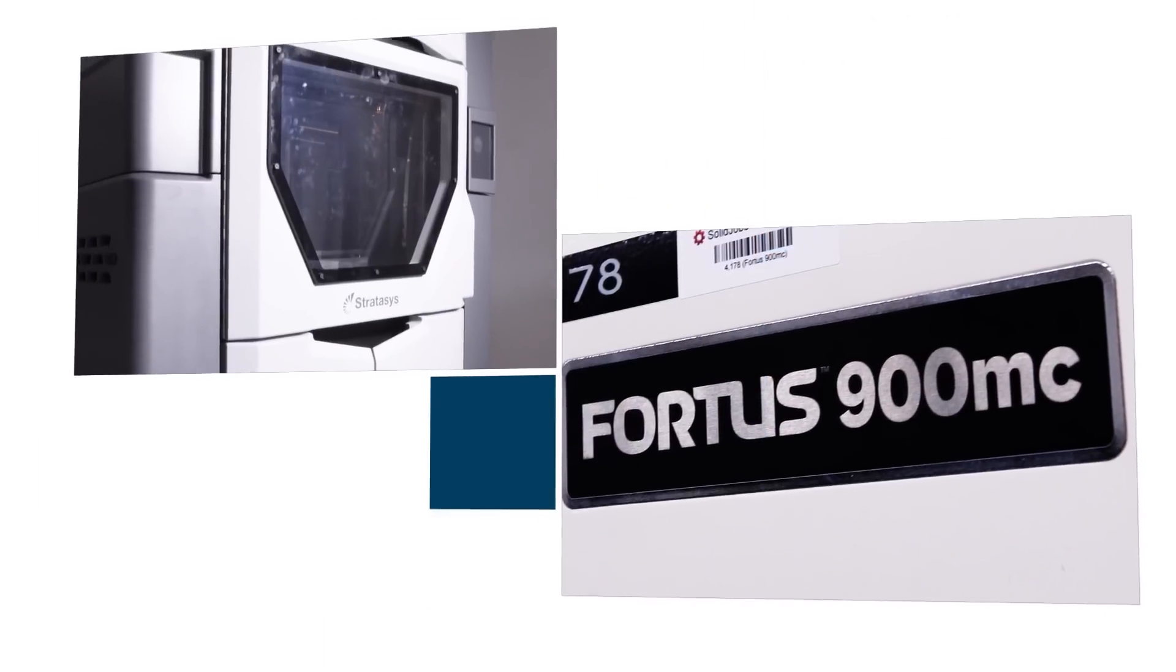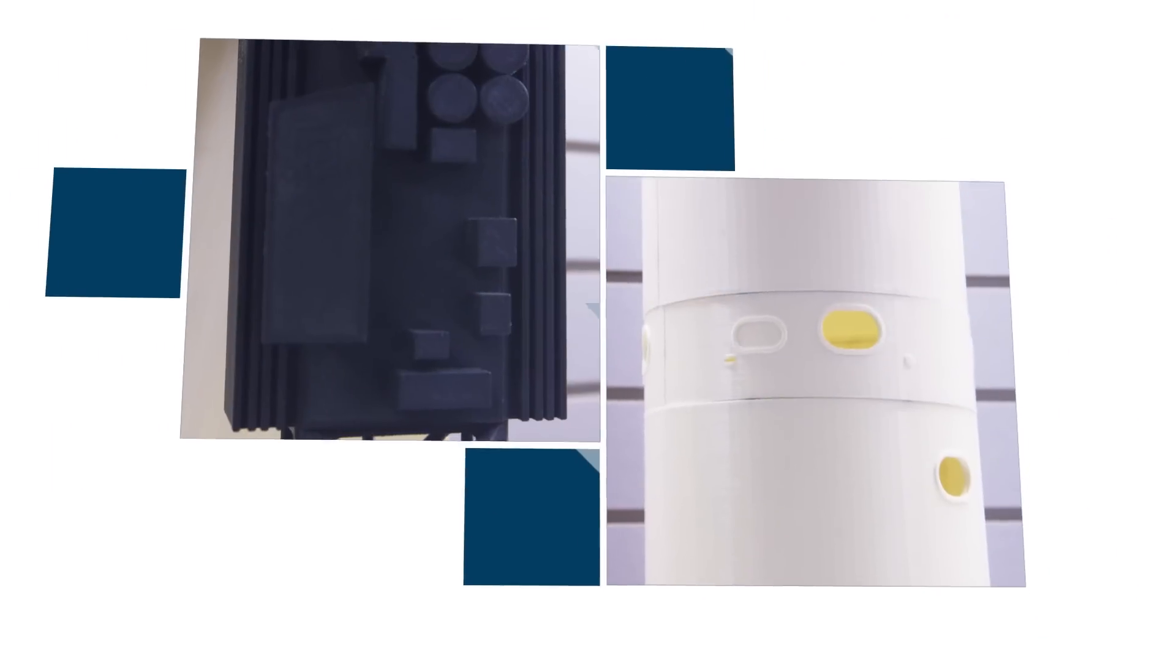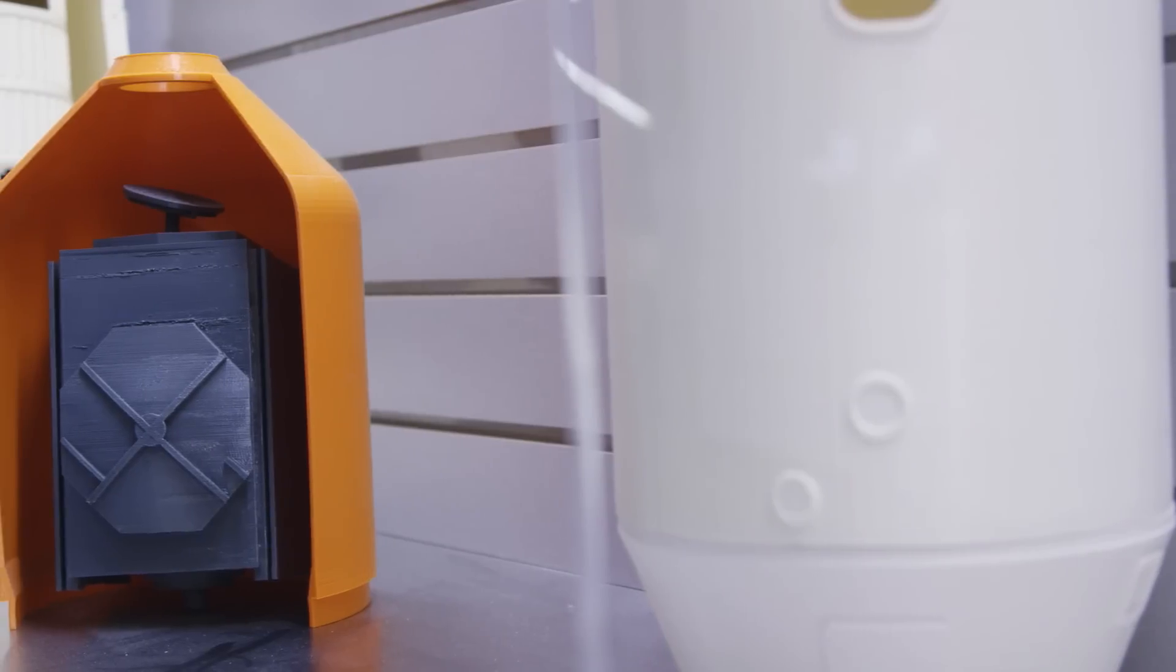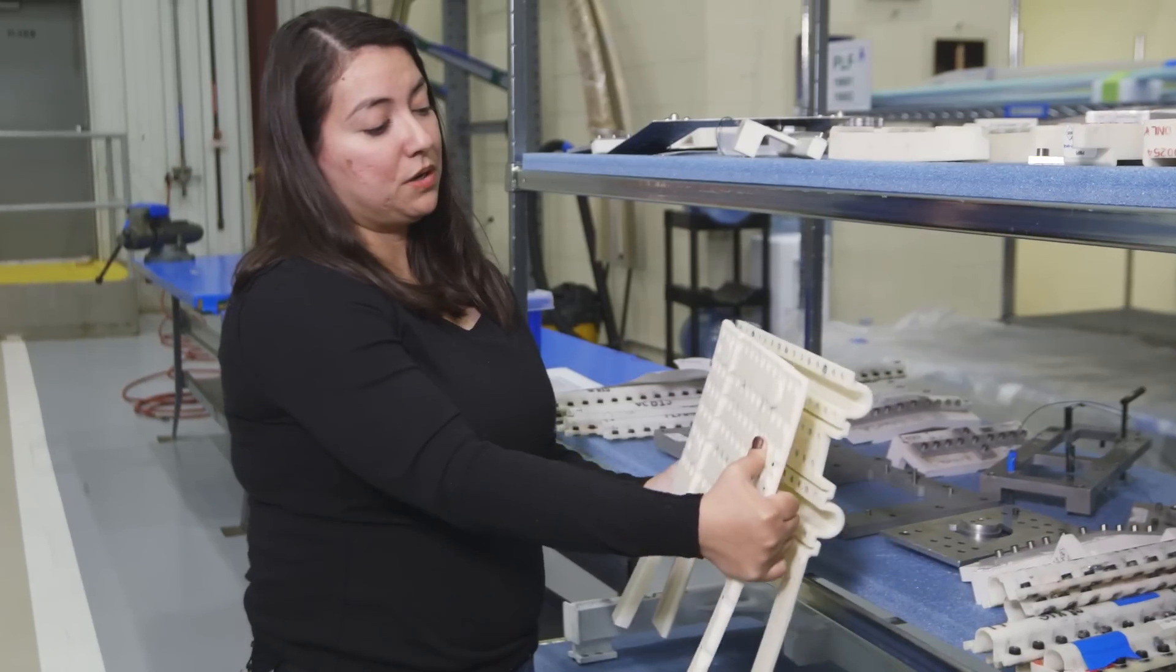When we initially got our first Fortis 900 printer we did a lot of prototyping and we made models and mock-ups and then evolved into more of a tooling usage where the factory production engineers and technicians are actually using the tools to build the rocket parts.